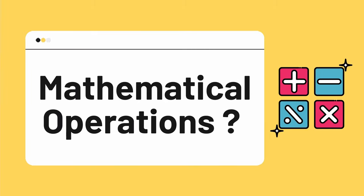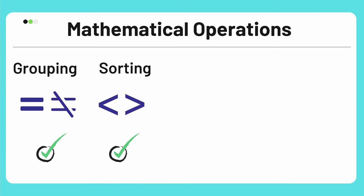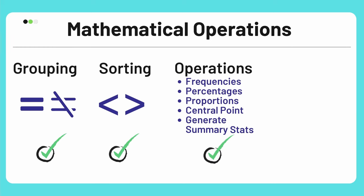For mathematical operations on ordinal data — this type of data can be grouped into categories and, since it follows some order, it can be sorted. You can sort it using basic comparison operators like greater than or less than, but note that there is no continuity in the relative distances between adjacent categories. You can also calculate frequencies, percentages, proportions, center point, and summary statistics.